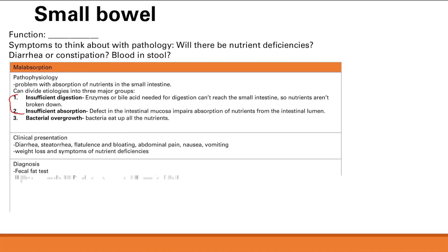Another test is the D-Xylose test, which distinguishes absorption problems. You give the patient xylose — a sugar similar to glucose that is normally absorbed and secreted in the urine — then check urine xylose levels. High xylose in the urine means absorption is fine, so the problem must be with digestion. Low xylose in the urine means there is at least a problem with absorption, though digestion could also be impaired.